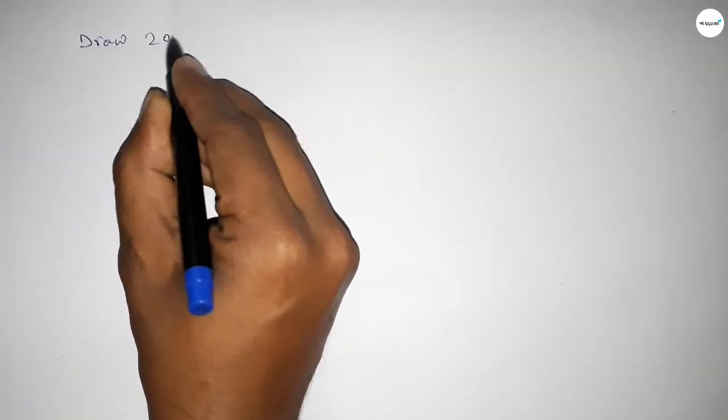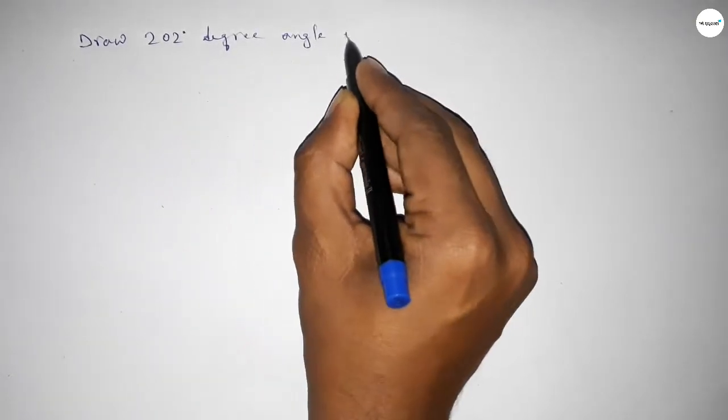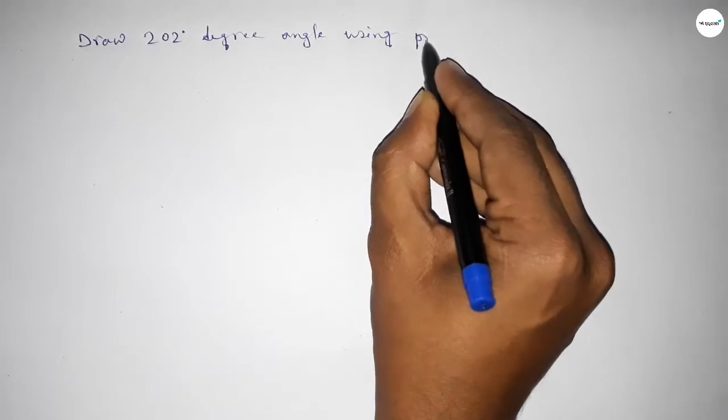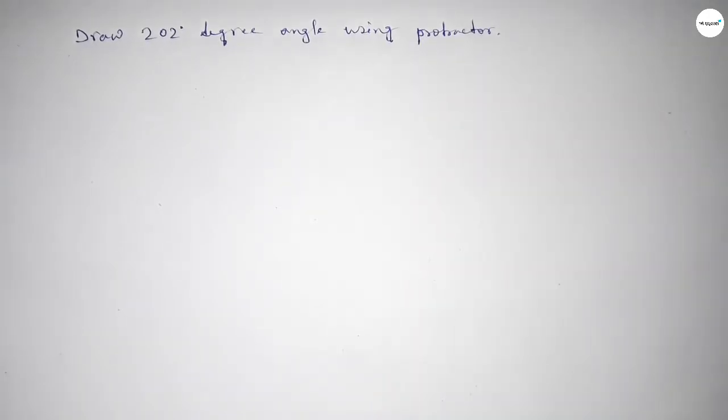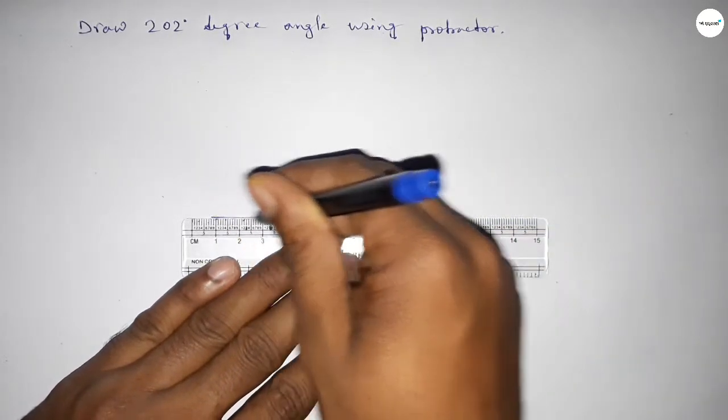Hi everyone, welcome to SI share classes. Today in this video we have to draw a 202 degree angle using a protractor. So let's start the video. First of all, we have to draw here a straight line of any length.